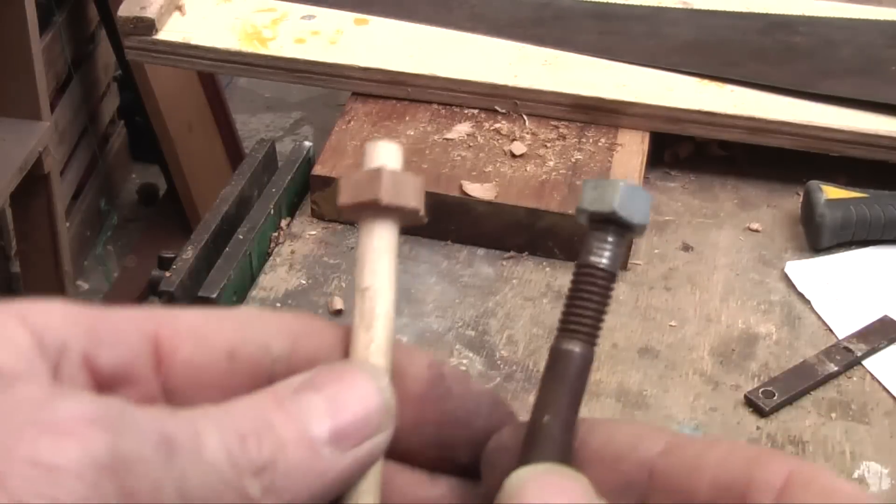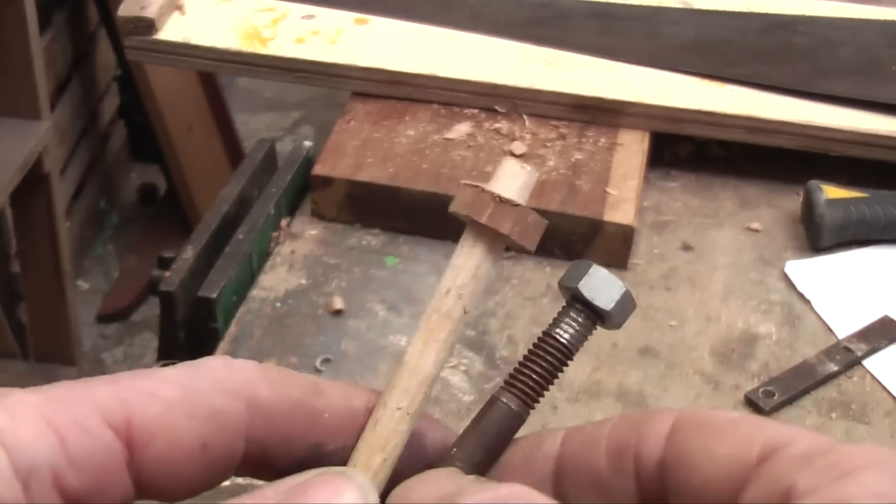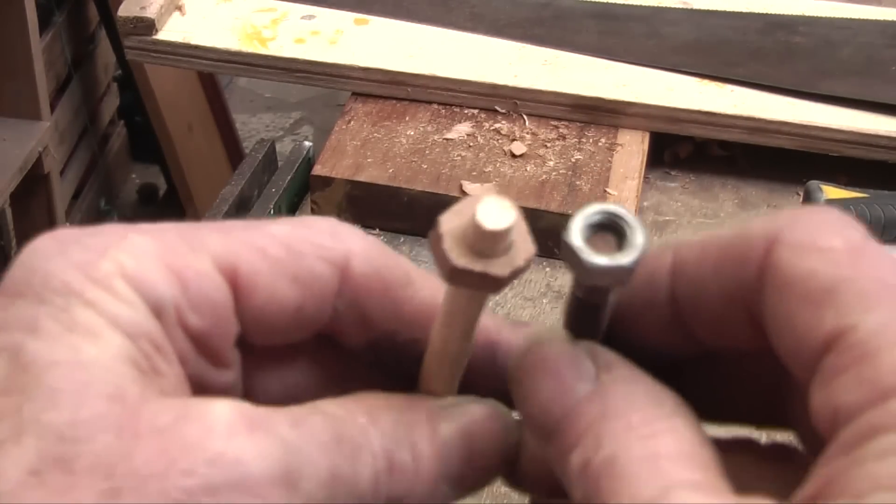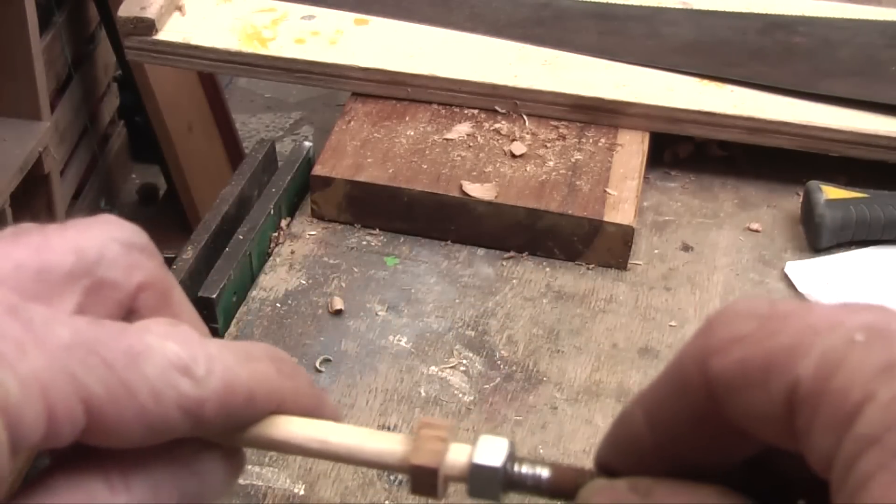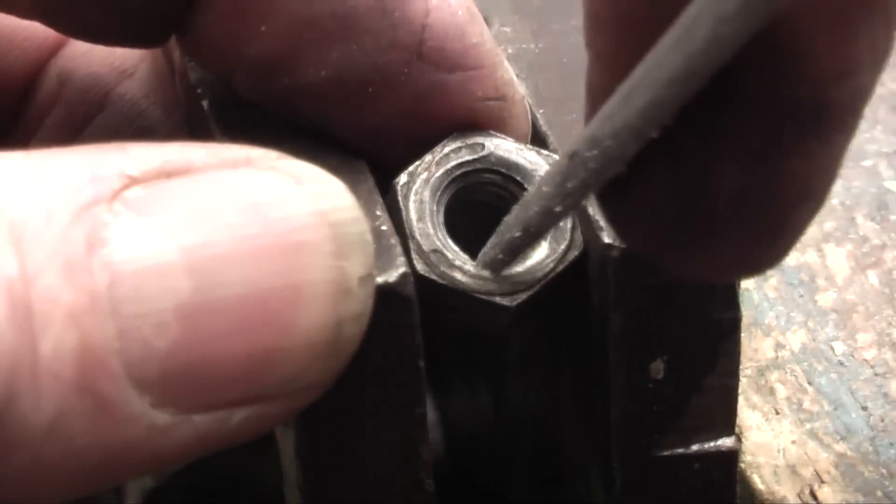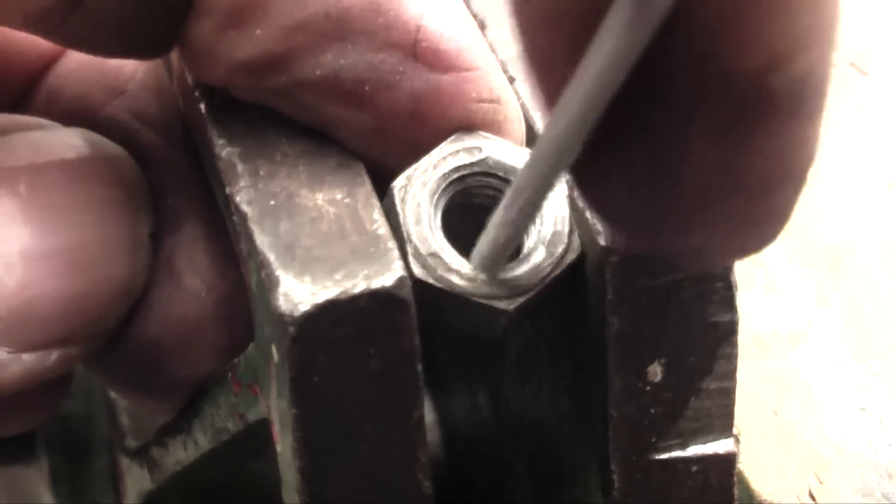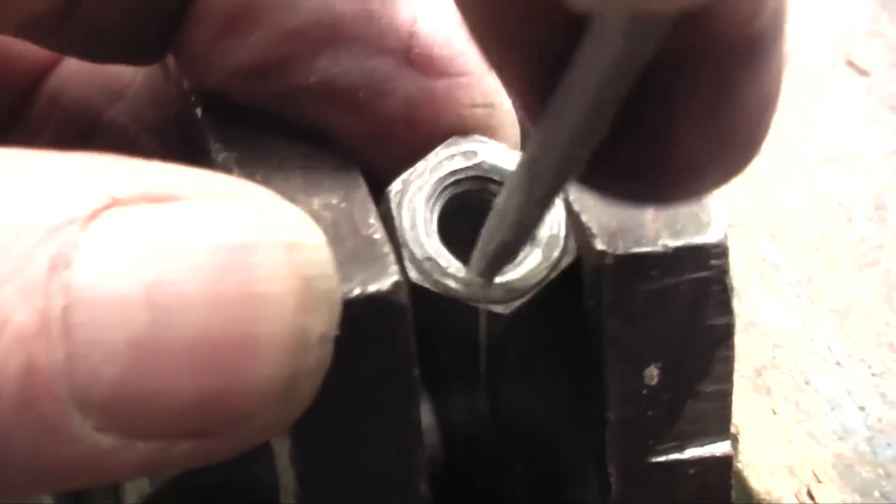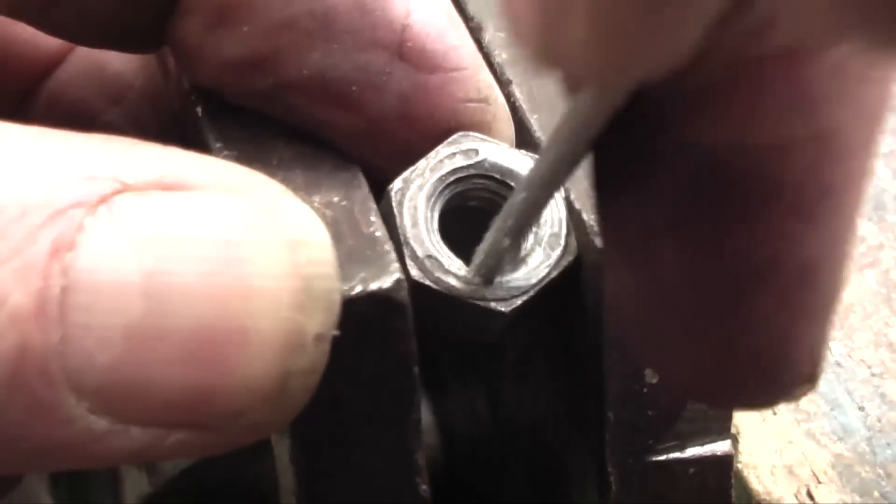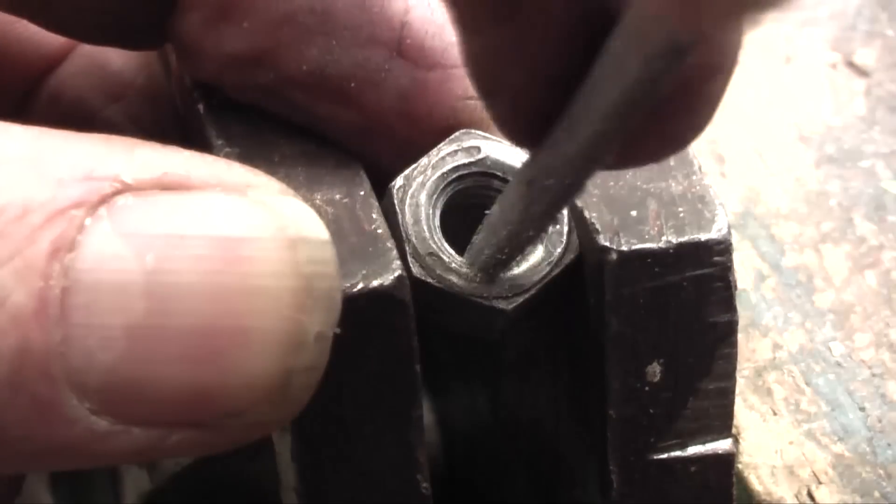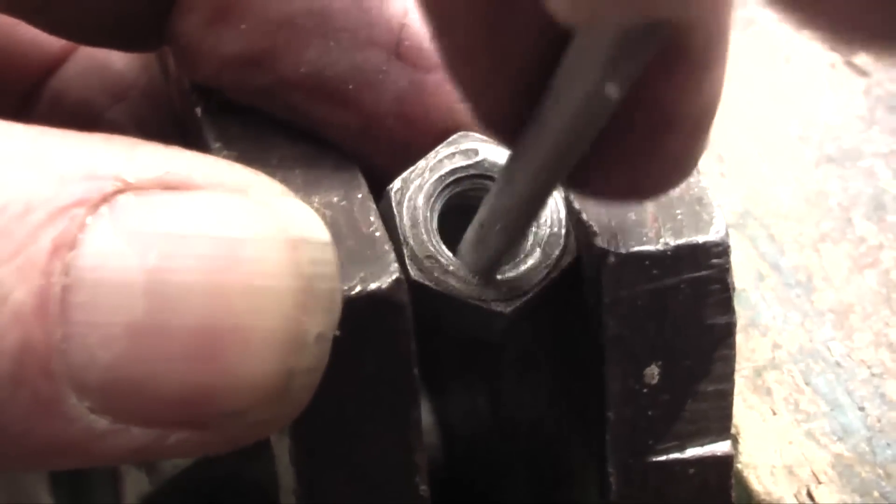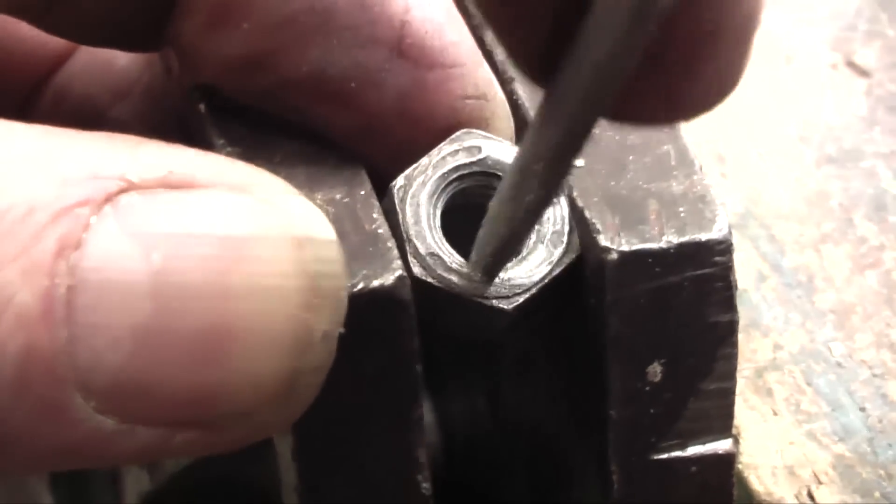Now if you need thread on it like a real one you're going to either get a tap and die and tap a thread on it, or if you don't have one of those you can take a bolt that is the same size that will go on there and we can make a tap. Take a very small file and file out a little slot in the thread. The reason for that is so that when you put your bolt on the wooden thread, the material that it's going to cut out or grate is going to go into that groove and not get all squished in there.